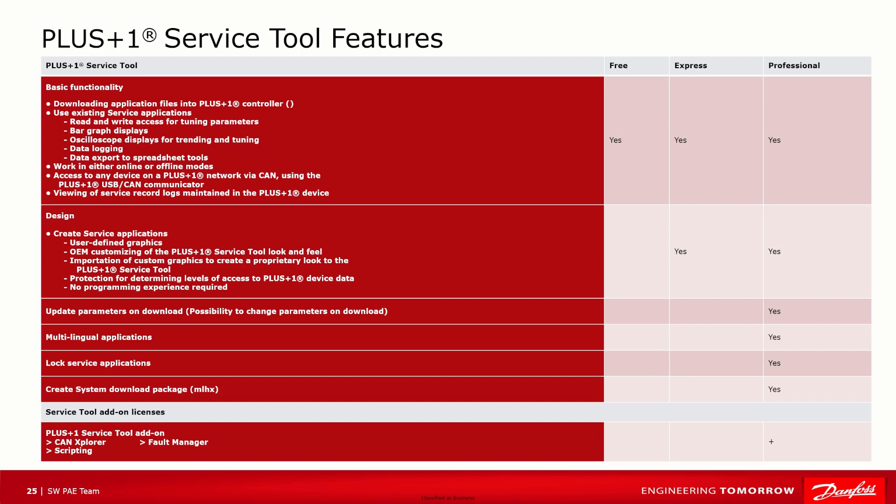Here's an overview of the features supported in each level of PLUS ONE Service Tool license. Similar to PLUS ONE Guide, the Service Tool can also be extended with an add-on module. With the Service Tool add-on license, you can compare P1D files using CLI functionality. A mobile Service Tool account is included in the Professional license, and a mobile Service Tool app is free for all users.